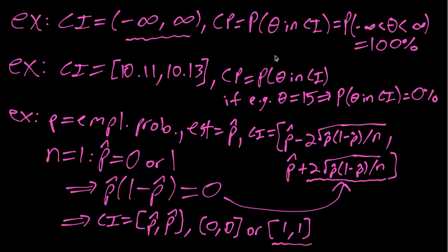Or 1, 1 would say it's definitely a hundred percent, which of course is also not true. So in this case where we have a very small n, we get results that just don't make any sense. And correspondingly, the coverage probability will be 0, assuming p is not literally 0% or 100%.